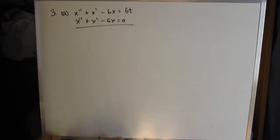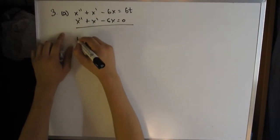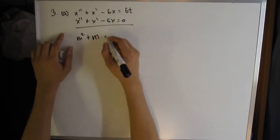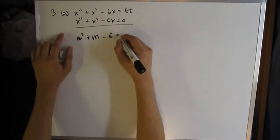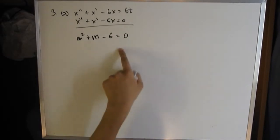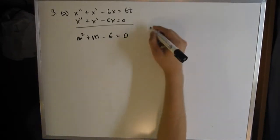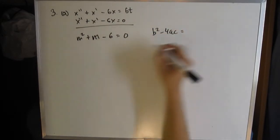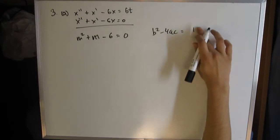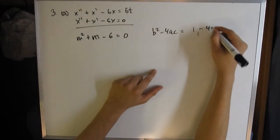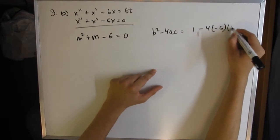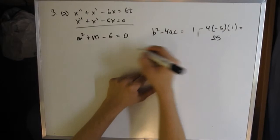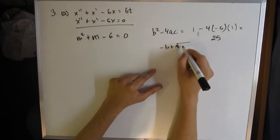We do this normally. We take m^2 for the second derivative, plus m for the first derivative, minus 6 equals 0. This is basic solving. b^2 - 4ac will give you 1 minus 4 times -6 times 1, which equals 25. You do -b ± √Δ all over 2a.